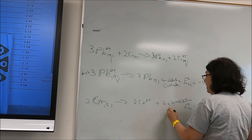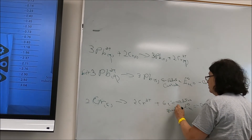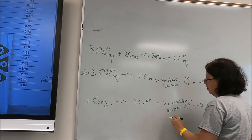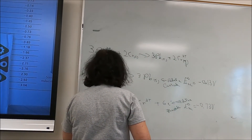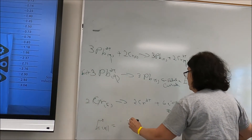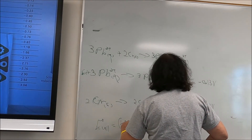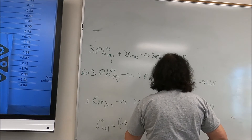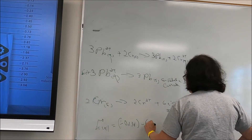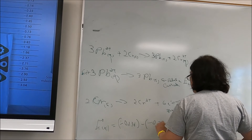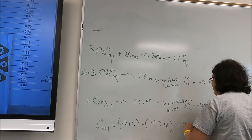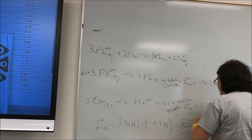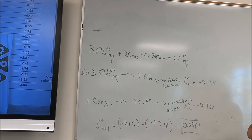My reduction (Pb²⁺/Pb) is the cathode half reaction; my oxidation (Cr/Cr³⁺) is the anode. So E°cell = E°cathode − E°anode = (−0.13 V) − (−0.73 V) = +0.60 V.